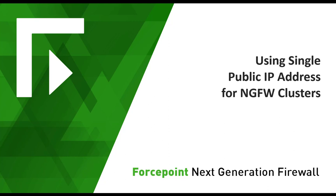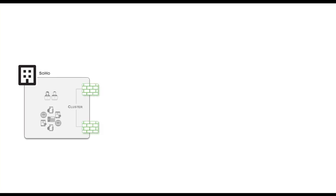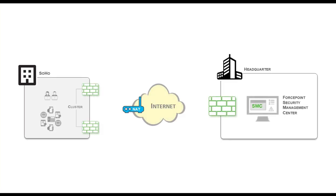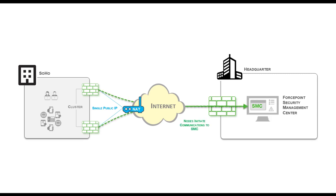The main motivation is to enable the use of firewall clusters in smaller remote offices. The current communication model between the SMC and clusters requires each of the nodes in the cluster to have a public IP address that is directly accessible from the SMC. To support a setup where the customer may have just a single public IP address, we plan to reverse the control connection between nodes and the management server.